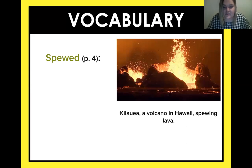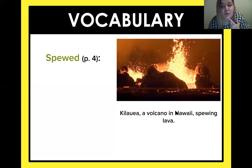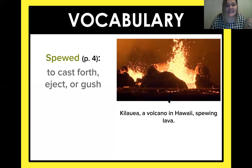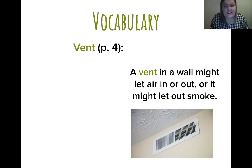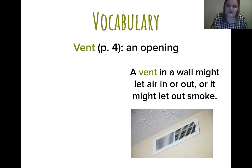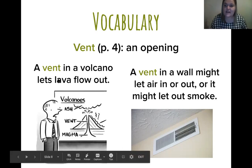Let's go ahead and start on our vocabulary. Do you know what that first word is? It's actually the word 'spewed.' We have a volcano in Hawaii spewing lava. So what could it mean, fourth graders? It is to cast forth, to eject, or to gush — so it's gushing out of that volcano. What about this next word? In our story today, they're going to use the word 'vent.' We know vents on the wall let air in or out, but what about a vent on a volcano? A vent is just an opening — a vent on a volcano is what lets the lava come out; it's that opening on the volcano.